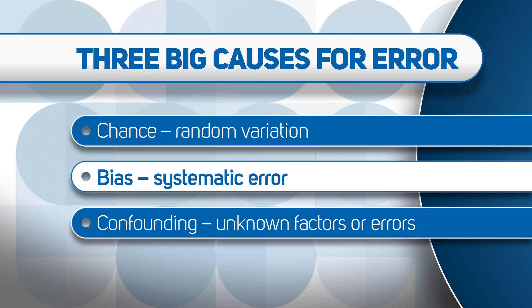Bias is a systematic error. You've done something — or many things — wrong in the study design or conduct. Once the study is done, there's nothing you can do to correct it — it's biased. For example, you used ultrasound imaging to screen for thyroid abnormalities, but you only screened the exposed group and not the non-exposed group. So you're going to get more thyroid abnormalities in the exposed people simply because the method of ascertaining or determining outcome was different.